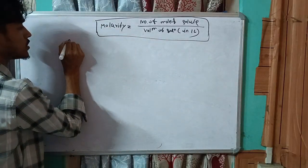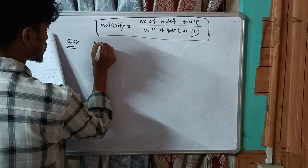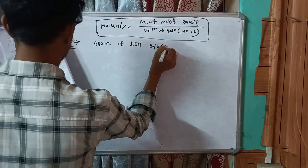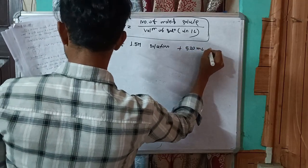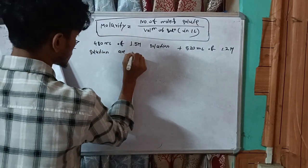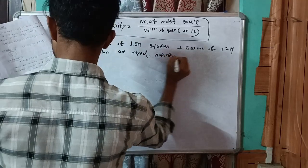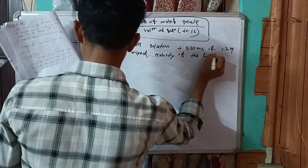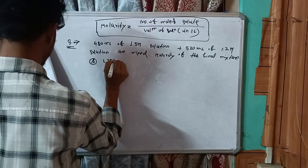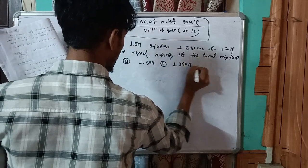Last time's question involves a mixer solution. The question is: 480 mL of 1.5 molar solution plus 520 mL of 1.2 molar solution are mixed. Find the molarity of the final mixture. Options: A) 1.20 M, B) 1.50 M, C) 1.344 M, D) 2.2 M.